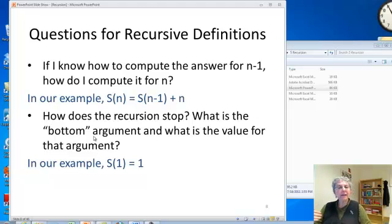When you have a recursive definition like this, there's a couple of questions you have to be able to answer. First of all, if you know how to compute the answer for n minus 1, and possibly other smaller values, how do you compute it for n? So in our example, that was this part of the definition that says s of n equals s of n minus 1 plus n.